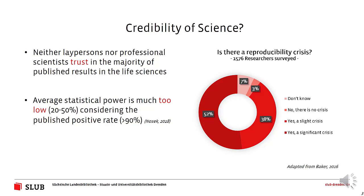Something doesn't appear to be quite right, and there's data to back that up. For example, if we look at the average statistical power of findings in the life sciences, we see that power is very low and it doesn't correspond to the published rate of positive findings, which is actually well above 90 percent. Something definitely is not quite right, and as researchers we're obviously aware of that.